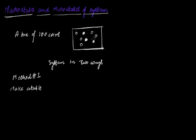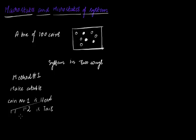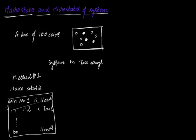We shake this box randomly and we look at all the coins — some will be heads, some will be tails. So we can make this entire table and say coin number one is heads, coin number two is tails, and we can do this for all hundred coins. Here coin number hundred is heads, and so on. You can make this entire giant table and keep it aside. So that's method one.